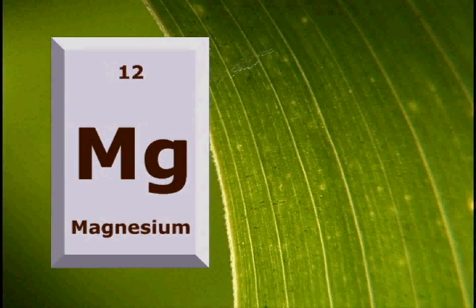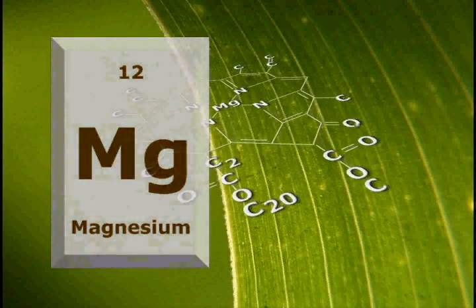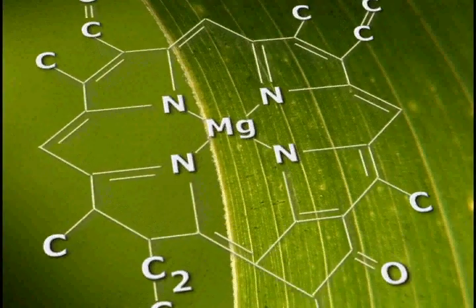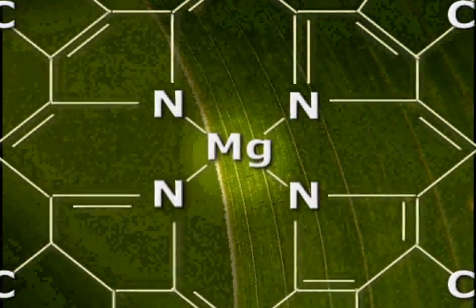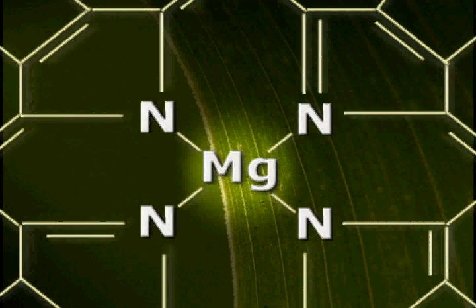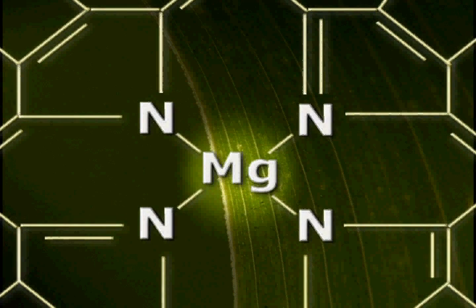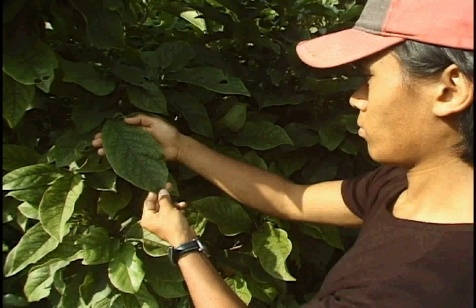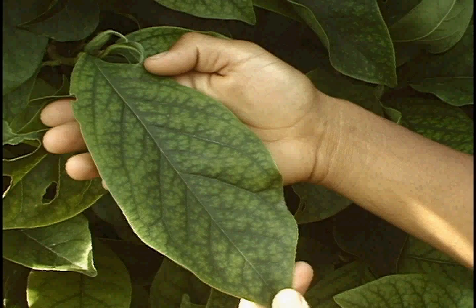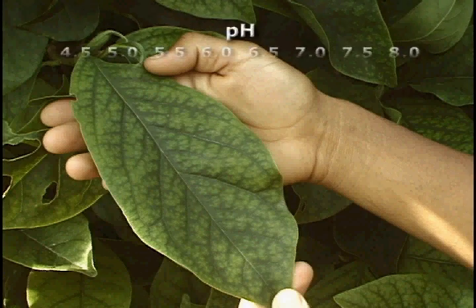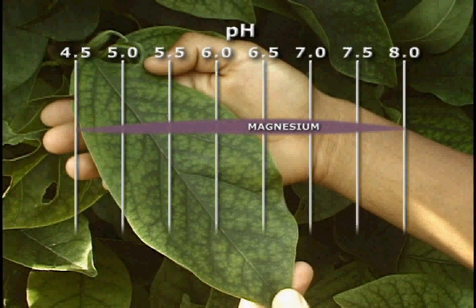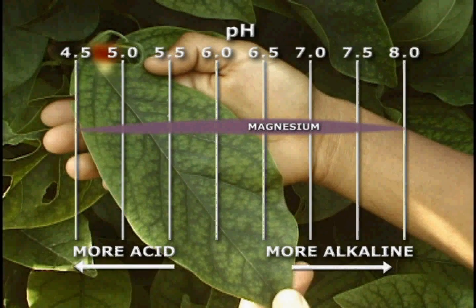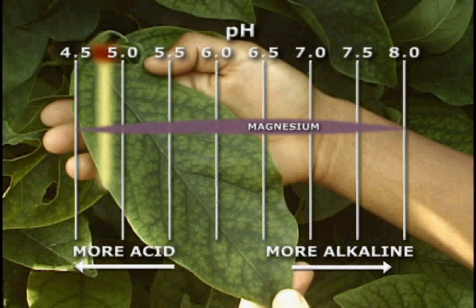As mentioned earlier, magnesium is a central element of the chlorophyll molecule and is responsible for the initial absorption of light energy within leaf tissues. In addition, magnesium is essential to the very formation of this photosynthetic pigment. A lack of magnesium usually shows up as intravenal chlorosis on older plant tissues, but unlike nitrogen deficiency, this chlorosis is found in combination with a low soil pH.